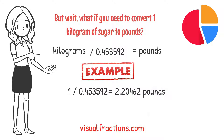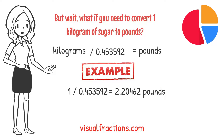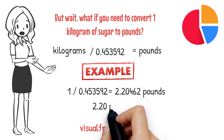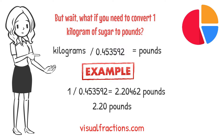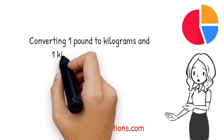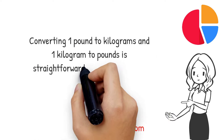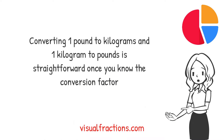We should round this number to the nearest hundredth, so our final answer is approximately 2.20 pounds. And there you have it — converting 1 pound to kilograms and 1 kilogram to pounds is straightforward once you know the conversion factor.